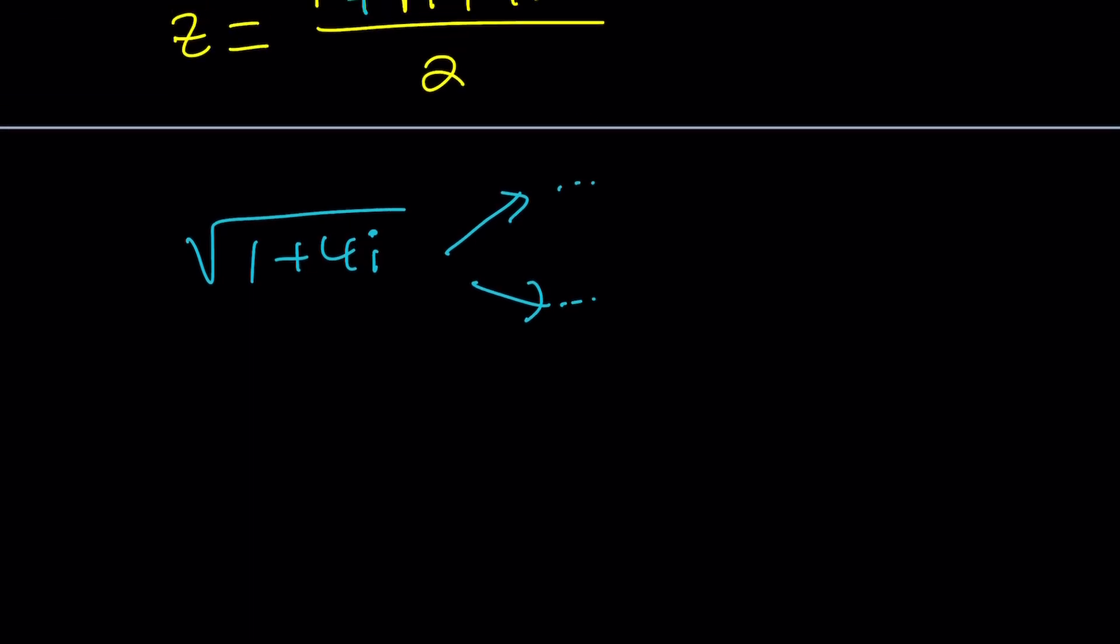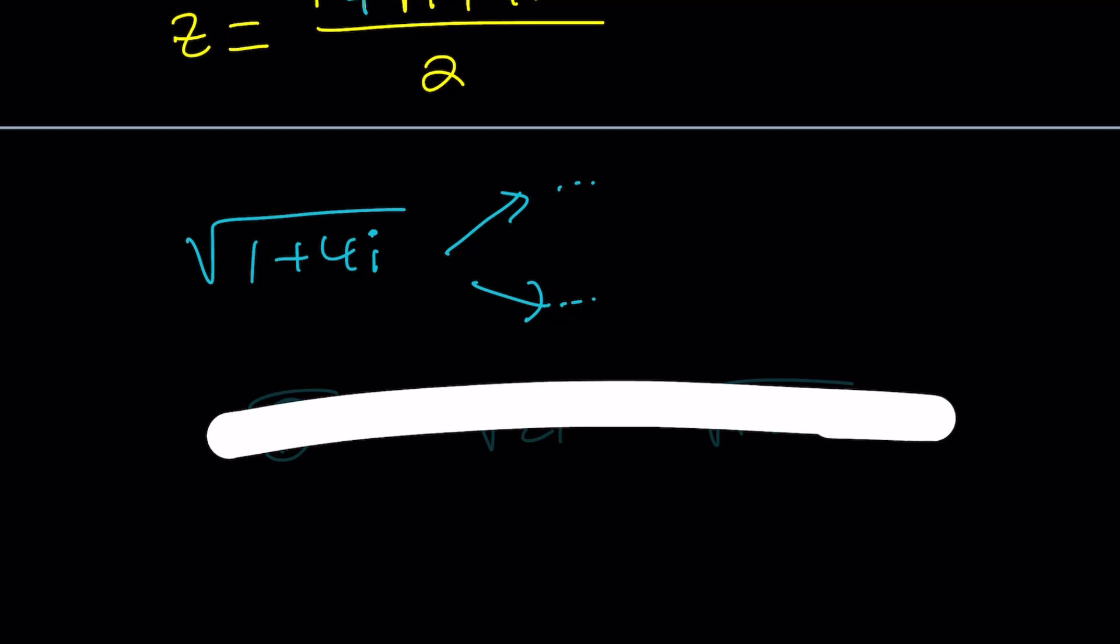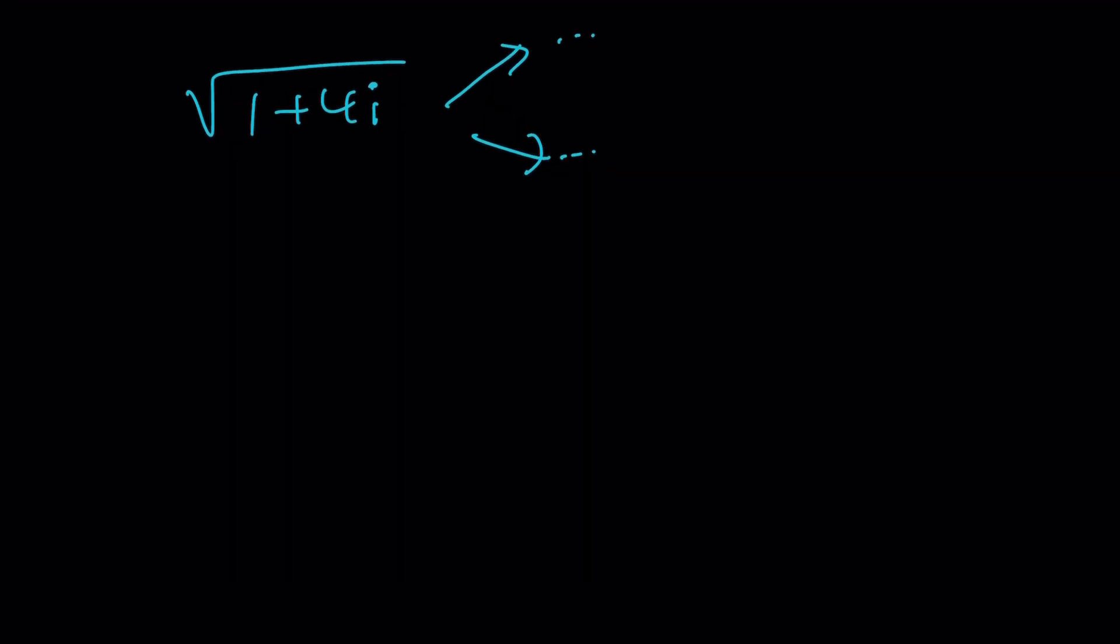How do you find the square root of 1 plus 4i, though? You can write this in polar form and then go for it. Or if you had 2i or if you had 1 plus i, you could easily convert these to polar forms because when you plot these numbers, you can find the angle right away.